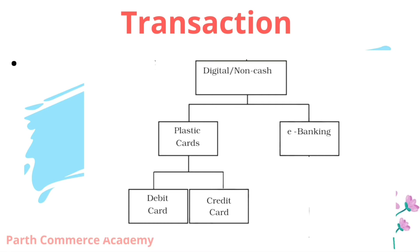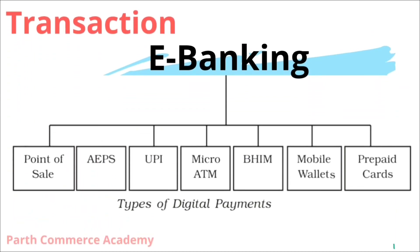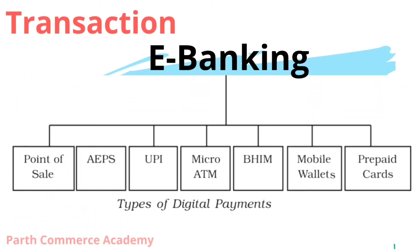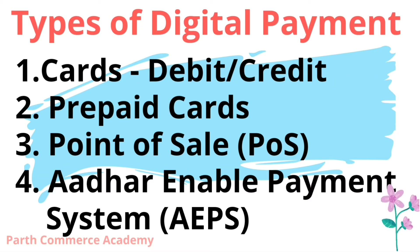The second option we have available is eBanking. In the case of eBanking, we have lots of options like point of sale, AEPS, UPI, Micro ATM, BHIM application, mobile wallets, and prepaid cards. These are all the things we are going to learn today. So let's see the types of digital payment.